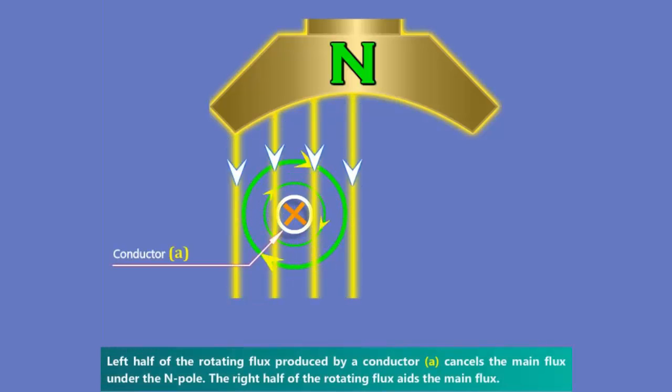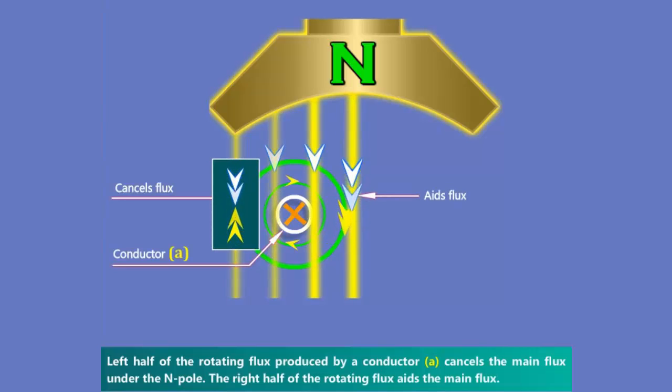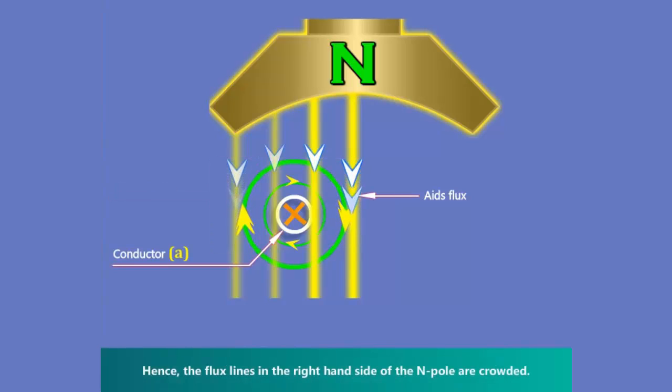The left half of the rotating flux produced by conductor A cancels the main flux under N pole. The right half of the rotating flux aids the main flux. Hence, the flux lines in the right-hand side of the N pole are crowded.